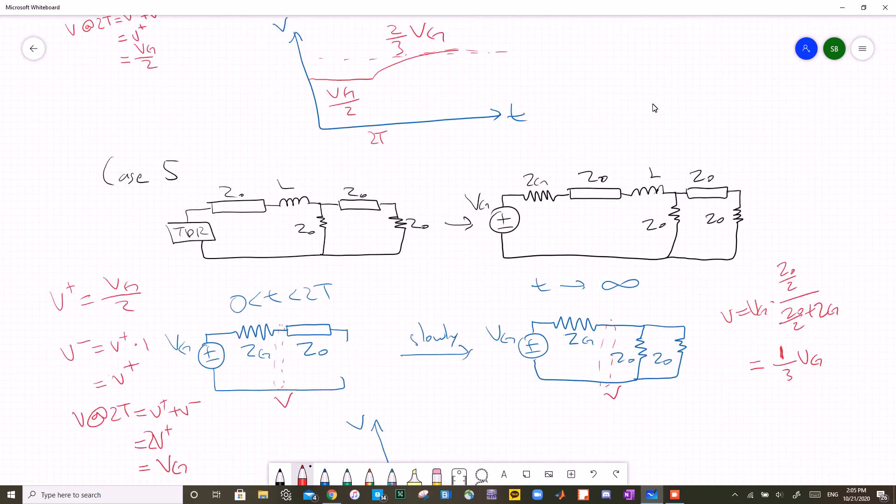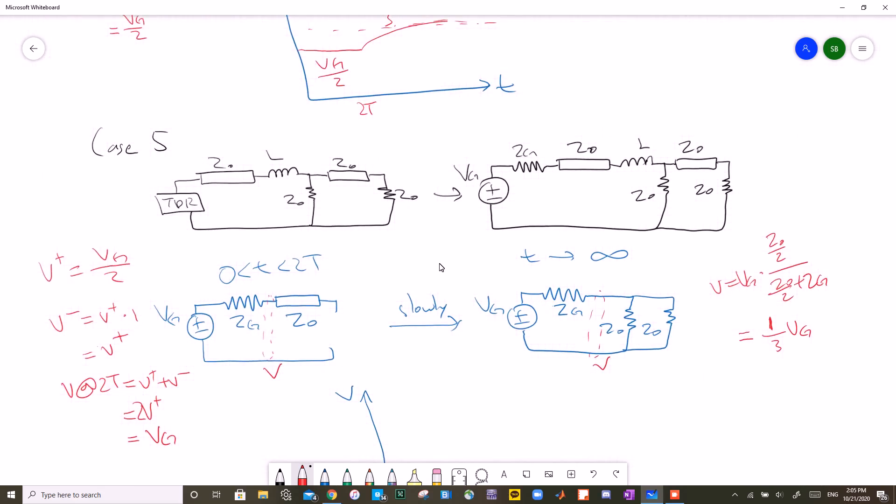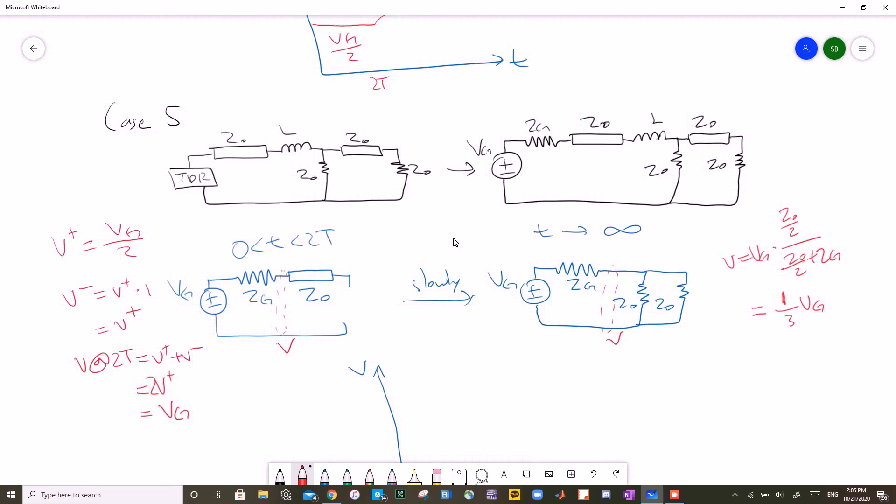And for the last case, we have another circuit with reactive components. So from 0 to 2T, the inductor will be opened, so all we have here is a circuit on the left. V plus will still be VG over 2. V minus, now that there's an open circuit, the reflection coefficient is now 1, so V minus will be V plus. And the voltage at 2T will be V plus plus V minus, which is just VG.